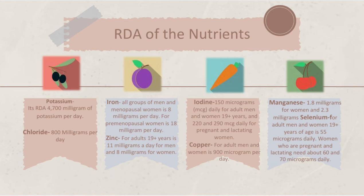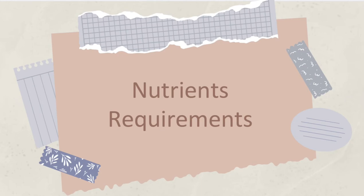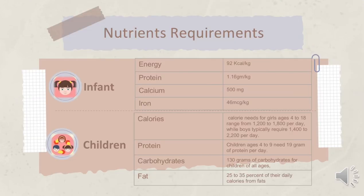Next topic, we have the nutrients requirements. The nutrients requirements of an infant are: energy 92 kilocalories per kilogram, protein 1.16 g per kilogram, calcium 500 mg, and iron 46 micrograms per kilogram.